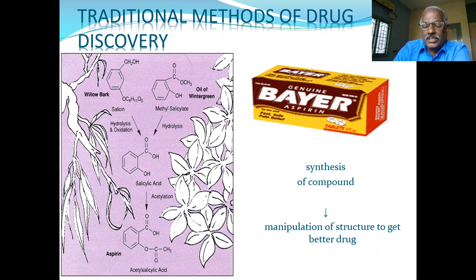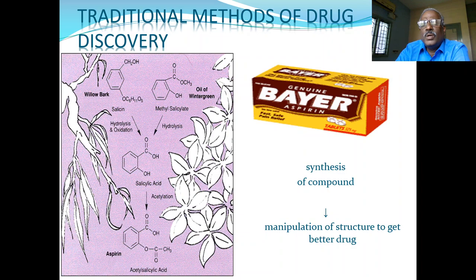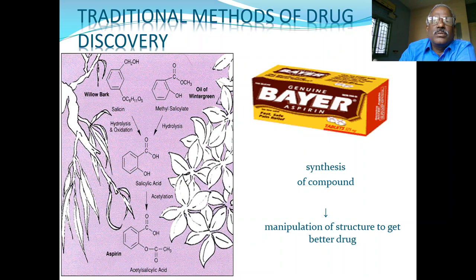Ibuprofen-like drugs have gastric hemorrhage as a side effect — as all non-steroidal anti-inflammatory drugs have gastrointestinal hemorrhage. So there was preparation of selective COX-2 inhibitors like celecoxib, rofecoxib, and etoricoxib. This is the journey of development of NSAIDs starting from salicin, salicylic acid, ibuprofen, and now with selective COX-2 inhibitors. Even though we are synthesizing compounds to increase therapeutic effect and reduce adverse effects, the structure has to be manipulated to get better drug candidates. This is the traditional method of drug discovery.